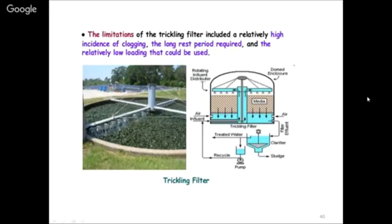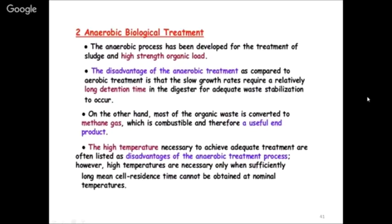Anaerobic biological treatment operates in the absence of oxygen and is used for sludge and high-strength organic wastewater. Very high BOD values - around 10,000 to 30,000 mg/L - call for anaerobic treatment, sometimes even with small flows but high BOD. The key design parameter is total load: flow multiplied by concentration. If organic content is very high and discharge is comparatively small, or if organic load is very high even with larger flows, anaerobic biological treatment is used. The biogas plant is a typical example of an anaerobic biological treatment plant.